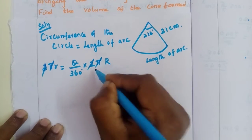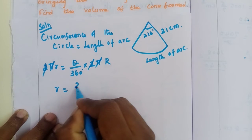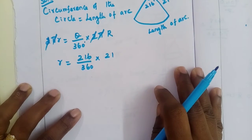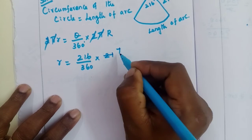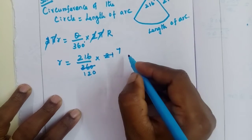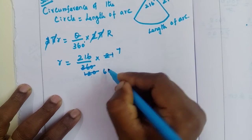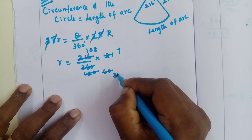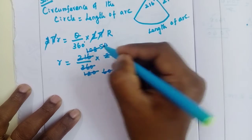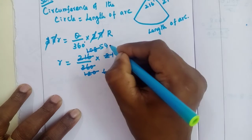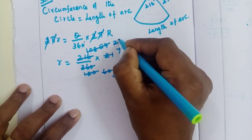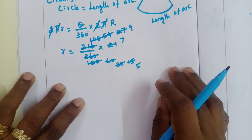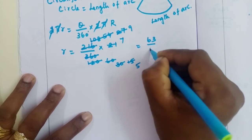So 216 by 360 into 2 pi into 21. Simplifying: 216 divided by 360 equals 3/5. Then 3/5 times 2 times 22/7 times 21. After calculation, R value is 63 by 5 cm, which equals 12.6 cm.